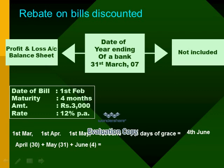The discount received by the bank on discounting of bills is an income of the bank. Out of these 4 months, 2 months' discount — from February to March end — can be treated as income of the bank and shown in the profit and loss account. The period for which discount cannot be treated as income: March end to April end is 1 month, April end to May end is 2 months, and from May end to June 4th — the date of maturity — is 4 days. So the total number of days falling after 31st of March are 65 days.